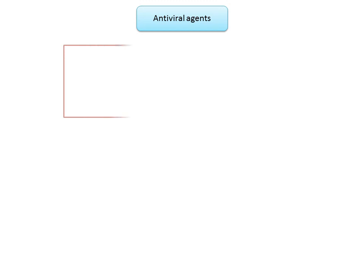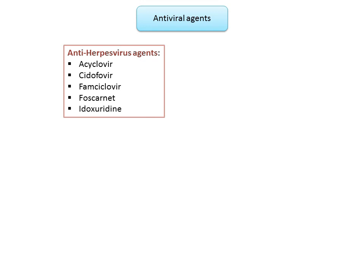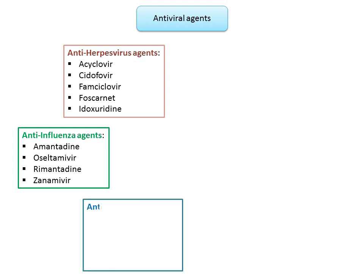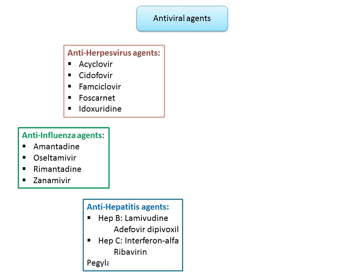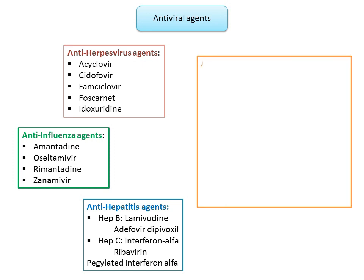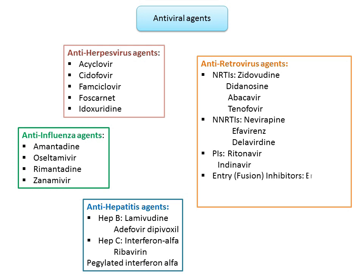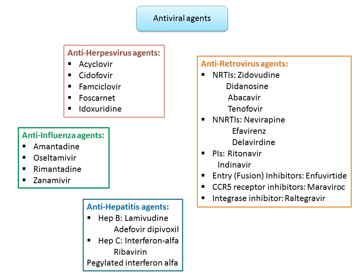A simple biological classification of antiviral agents: anti-herpesvirus agents include acyclovir, cidofovir, famciclovir, foscarnet and idoxuridine. Anti-influenza agents include amantadine, oseltamivir, rimantadine and zanamivir. Anti-hepatitis agents acting against hepatitis B include lamivudine and adefovir; against hepatitis C — interferon alpha, ribavirin and pegylated interferon alpha. Antiretroviral agents are classified into nucleoside/nucleotide reverse transcriptase inhibitors such as zidovudine, didanosine, abacavir and tenofovir; non-nucleoside reverse transcriptase inhibitors such as nevirapine; protease inhibitors like ritonavir; entry or fusion inhibitors such as enfuvirtide; CCR5 receptor inhibitors such as maraviroc; and integrase inhibitors such as raltegravir.